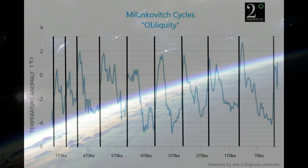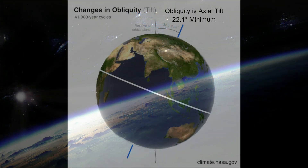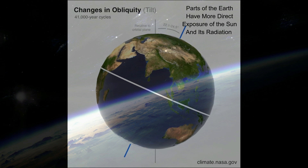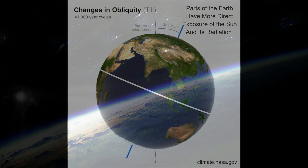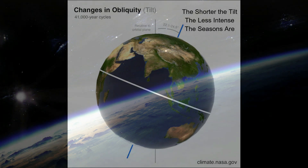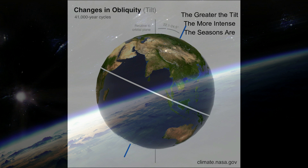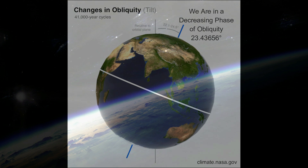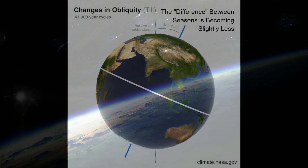Obliquity is the second factor in the Milankovitch cycles. Obliquity is the axial tilt and is believed to be in 41,000-year cycles, with a 22.1-degree minimum and a 24.5-degree maximum. Parts of the Earth have more direct exposure to the Sun and its radiation depending on the tilt. The shorter the tilt, the less intense the seasons are; the greater the tilt, the more intense the seasons are. We are in a decreasing phase of obliquity, currently at around 23.43 degrees, and the difference between seasons is becoming slightly less.